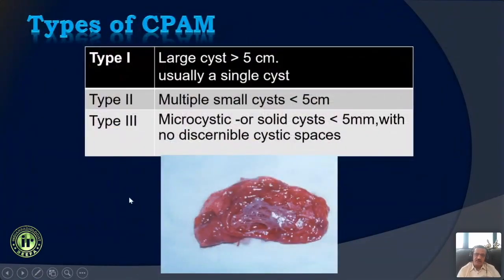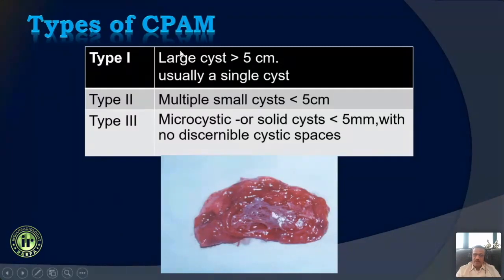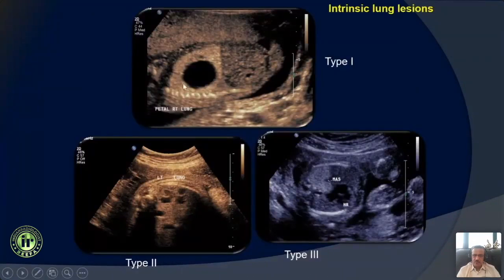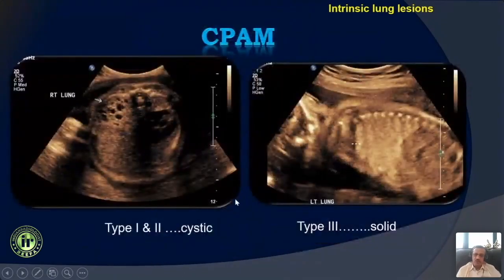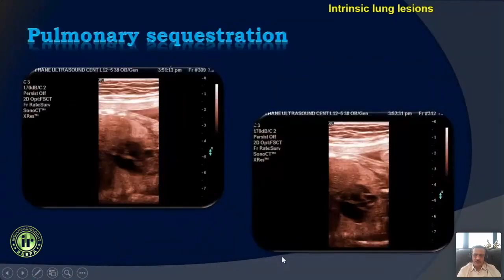This is an old classification based on histopathology. A lot of people have given it up, but I still feel it is a good way of describing and prognosticating these lesions. Type 1 is multiple large cysts, usually more than 5 centimeters. Type 2 are multiple small cysts, less than 5 centimeters. Type 3 are microcysts or solid cystic lesions, typically less than 5 millimeters. Type 3 lesions are usually solid, uniformly ecogenic, or they can be very tiny microcysts.